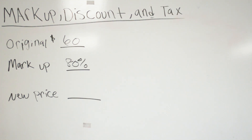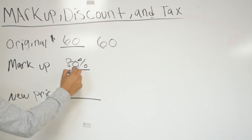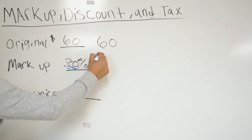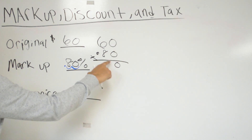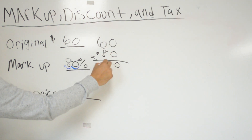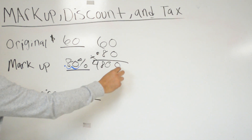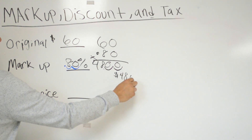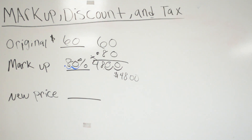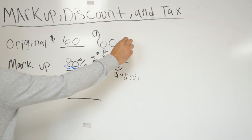Step one: we're going to multiply the original price, which is 60, times 80%. We move the decimal two places to get 0.80. Multiplying: 8 times 6 is 48, and we account for two decimal places — so the markup is $48 more than the original price.